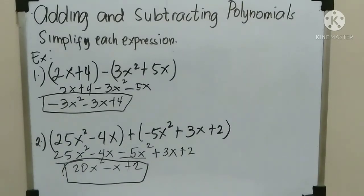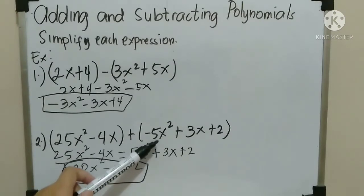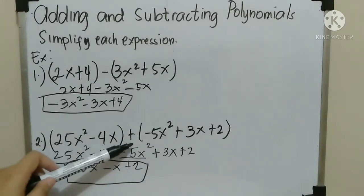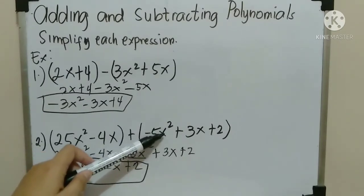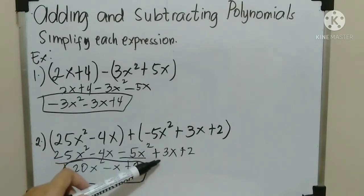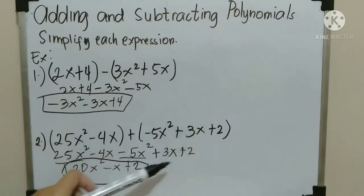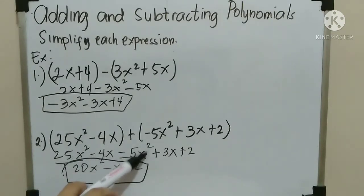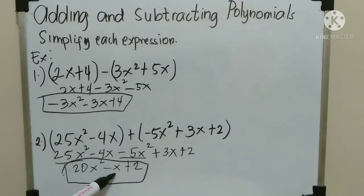Next, number 2 again: (25x² minus 4x) plus (negative 5x² plus 3x plus 2). Copy this side, then simplify. Positive times negative 5x squared — negative 5x squared. Positive times positive 3x — positive 3x. Positive times positive 2 — positive 2. Then: 25x² minus 5x² equals 20x squared. Negative 4x plus 3x equals negative x. Copy positive 2. Therefore, the answer is 20x² minus x plus 2.